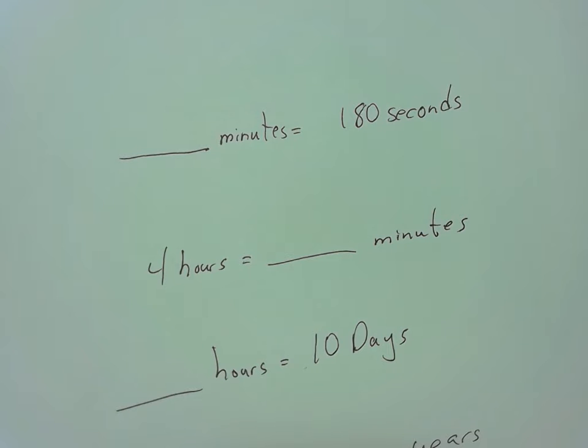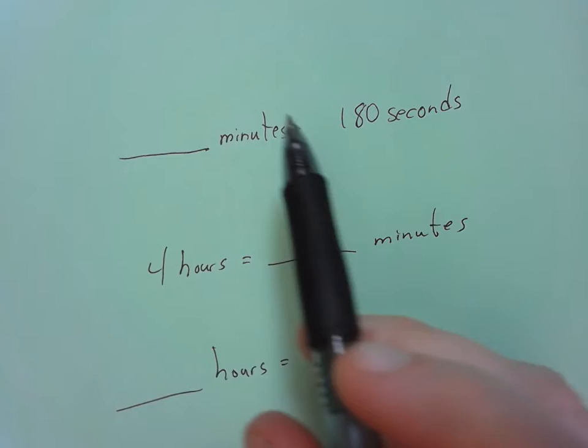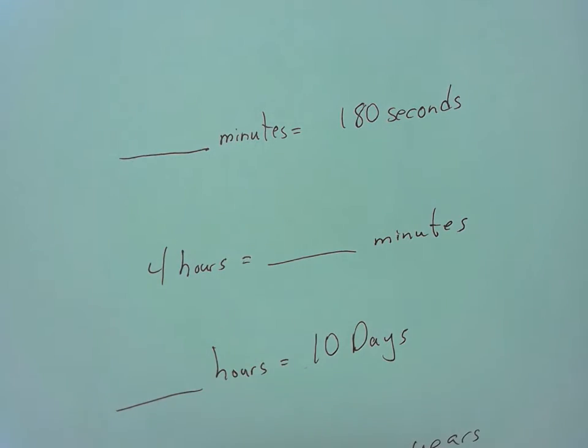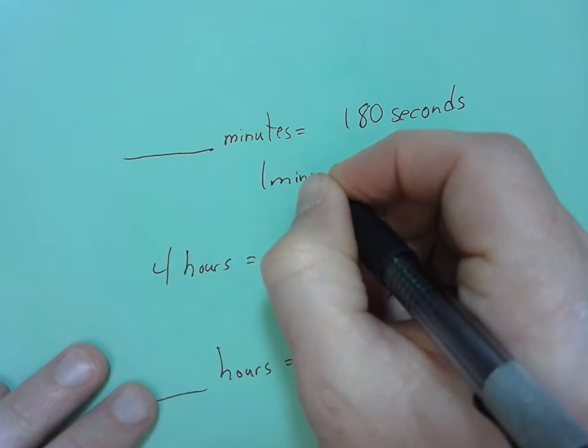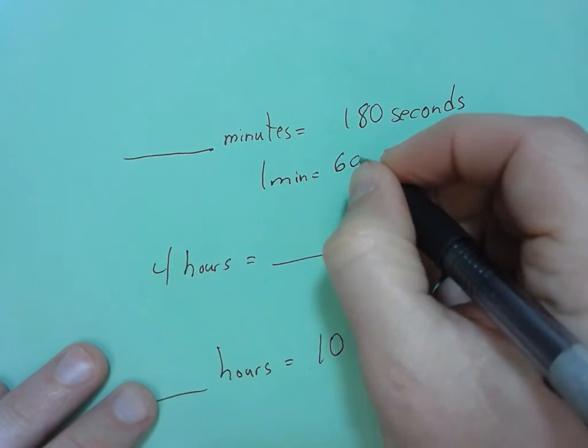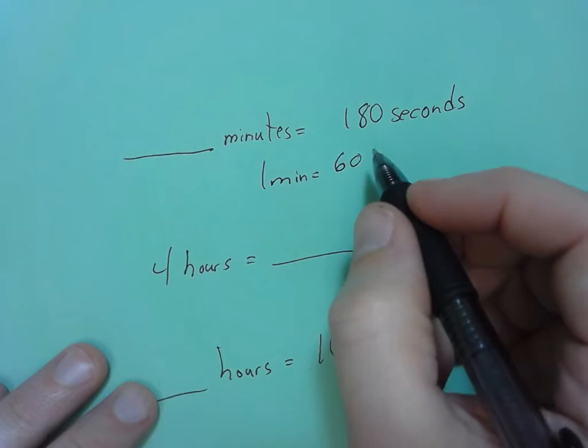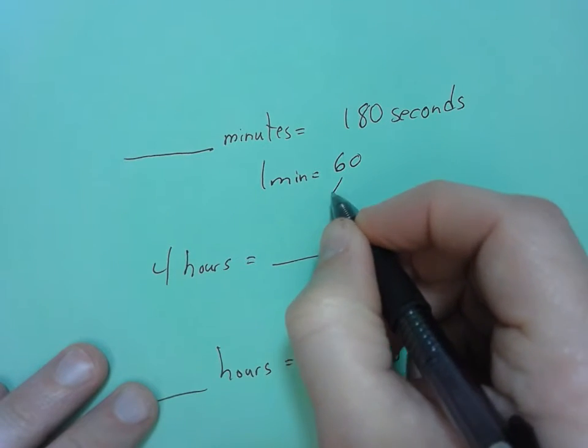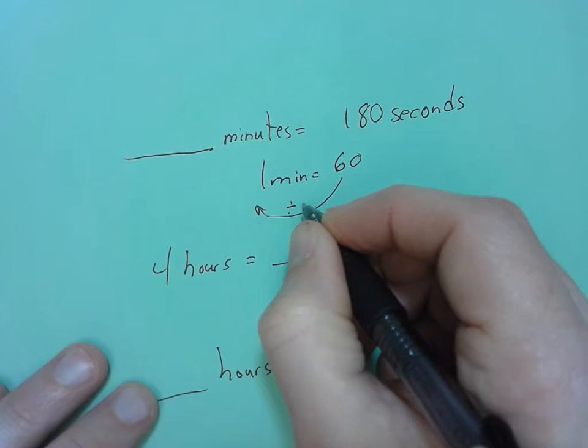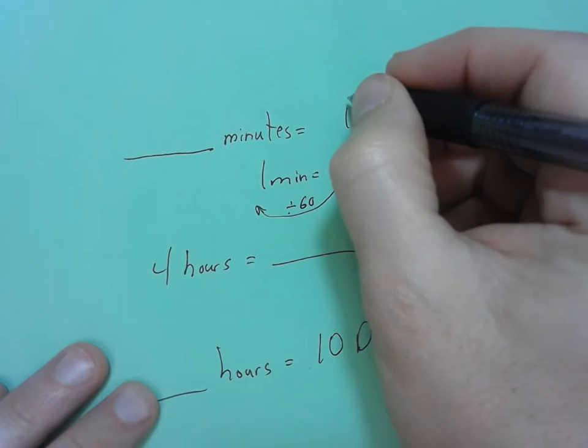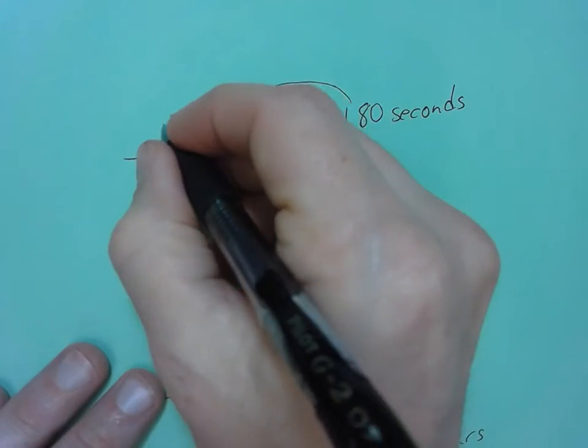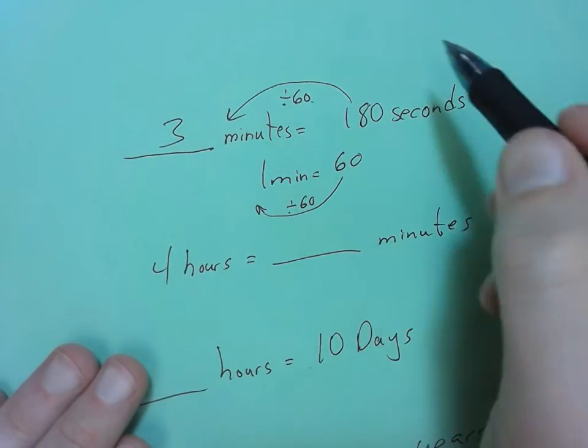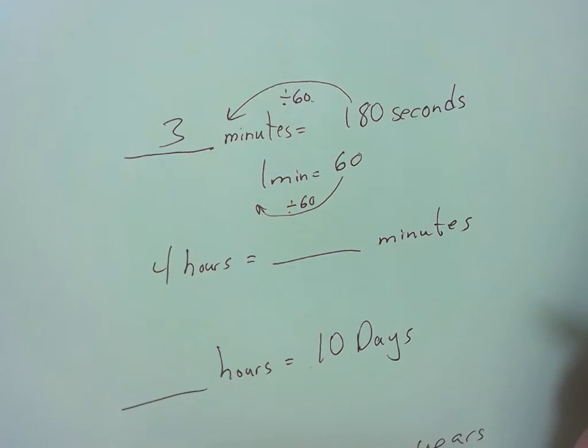If we know those things, we can do our conversions pretty easily. So this one here, we have so many minutes equals 180 seconds. We need to know that one minute equals 60 seconds. To get from 60 to 1, we divide by 60. So we're doing the same thing here. 180 divided by 60 equals 3 because 60 goes into 180 three times. 60 plus 60 plus 60 equals 180.